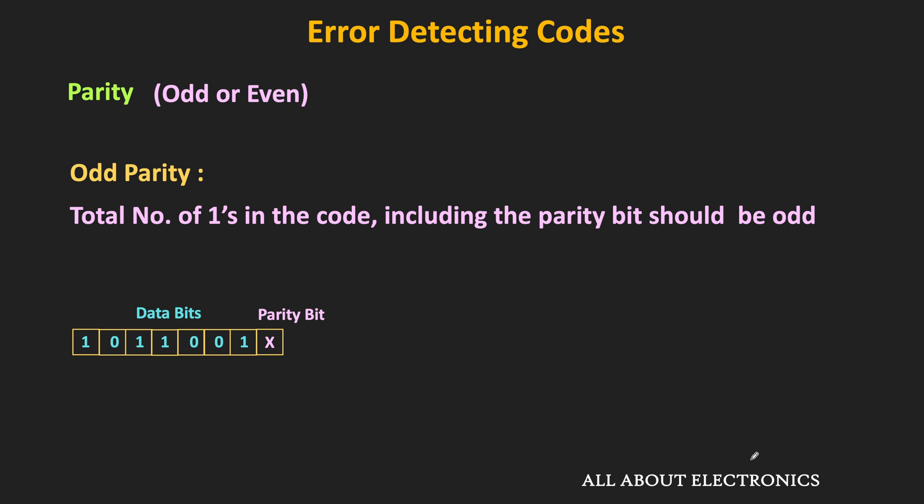For example, let's say we have 7 data bits and the total number of ones in the data bits is equal to 4. Therefore, for the odd parity, this parity bit should be equal to 1. Likewise, if the total number of ones in the data bits is equal to odd, then for the odd parity, this parity bit will be equal to 0. That means based on the total number of ones in the data bits, this parity bit is set.